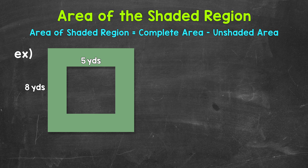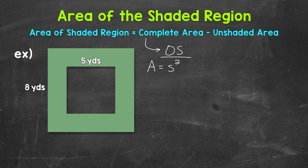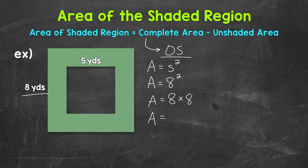Let's start by finding the area of the larger outside square. I'm going to put OS for outside square — this is the complete area of that larger outside square. Let's use the formula: area equals a side length squared. For that outside larger square, all of the sides are 8 yards. So let's plug in 8 yards: 8 squared means 8 times 8. The area of that larger outside square — 8 times 8 gives us an area of 64 square yards.